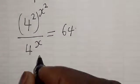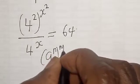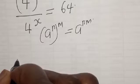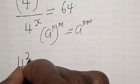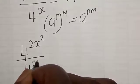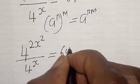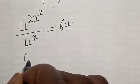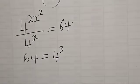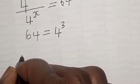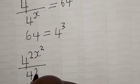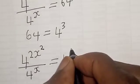Now, this can be simplified using the rule: a raised to the power n, raised to the power m, is the same as a raised to the power n times m. That gives us 4 raised to the power 2s squared, divided by 4 raised to the power s, is equal to 64. Note that 64 can be written as 4 cubed, that is 4 raised to the power 3. So we have 4 raised to the power 2s squared divided by 4 raised to the power s is equal to 4 raised to the power 3.